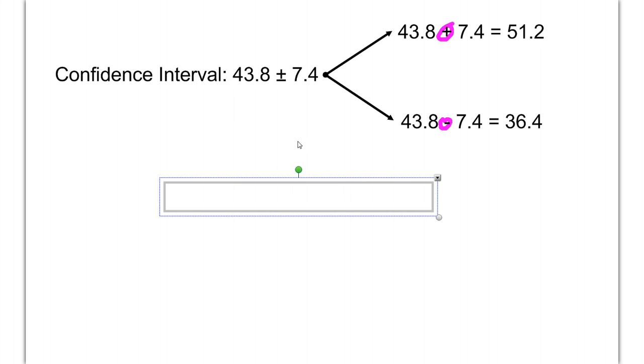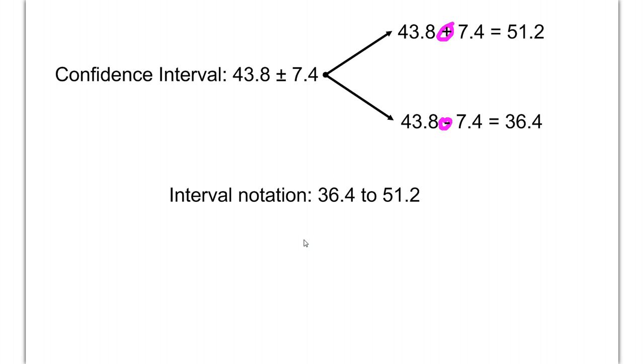So our confidence interval in this problem here, if you were to rewrite it in interval notation, it would go from 36.4 to 51.2. And that's how you switch back and forth between the two different forms.